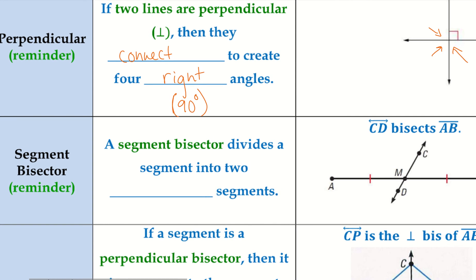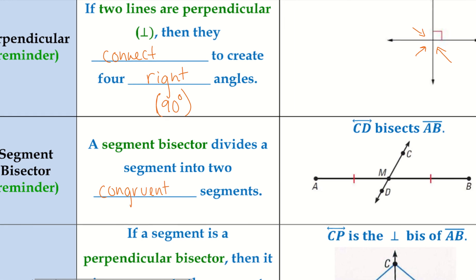And then we have a segment bisector, which divides a segment into two congruent segments. So CD bisects AB — CD is the one doing the bisecting — which means we have this part of the segment and then this part of the segment, and they're both congruent. So AM would be congruent to MB.